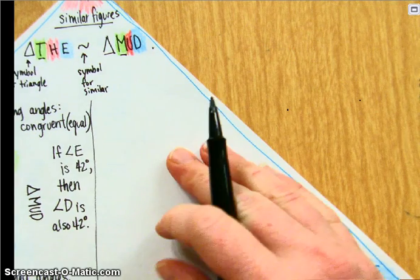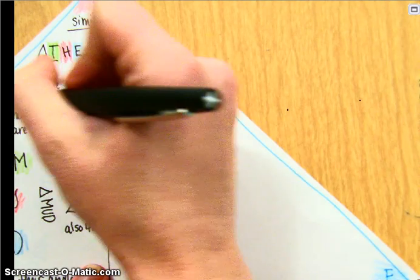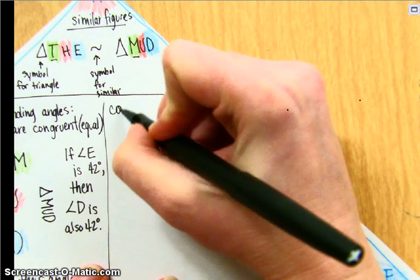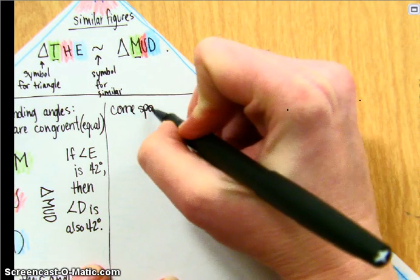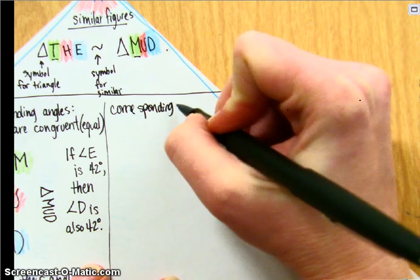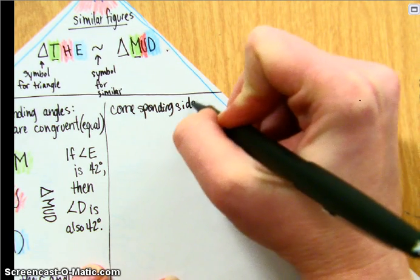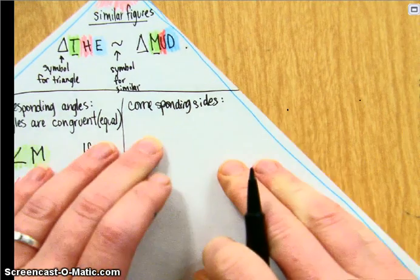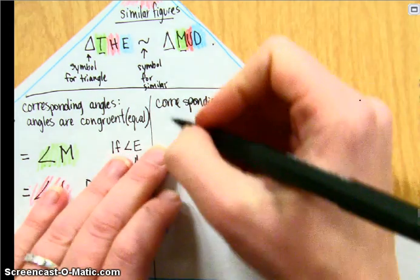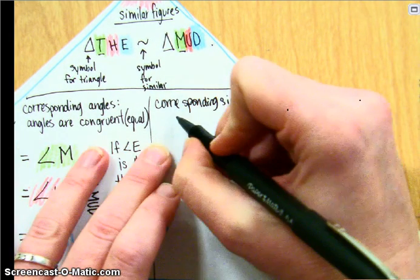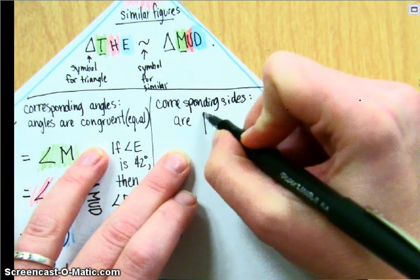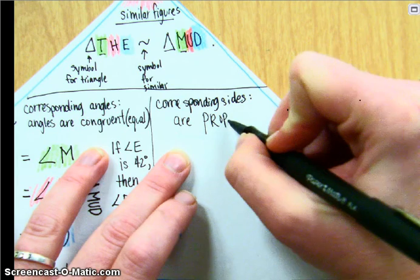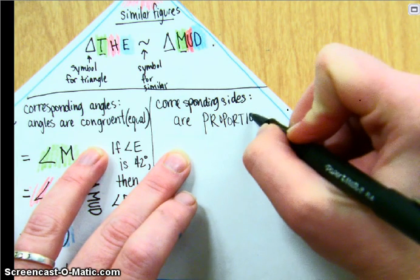Moving on, corresponding sides. For similar triangles, or similar figures, they are not congruent, they are proportional.